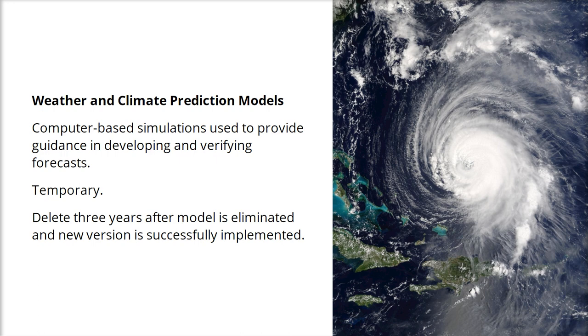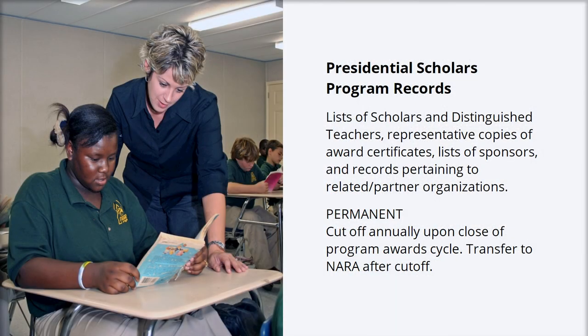A record schedule reads: Weather and climate prediction models — computer-based simulations used to provide guidance in developing and verifying forecasts. Temporary: delete three years after model is eliminated and new version is successfully implemented. You can see the unique mission and work of an agency reflected in its agency-specific schedule. So the program records you find in the National Park Service's schedule will be different from those at the U.S. Mint, Bureau of Indian Affairs, Department of State, or Department of Education.